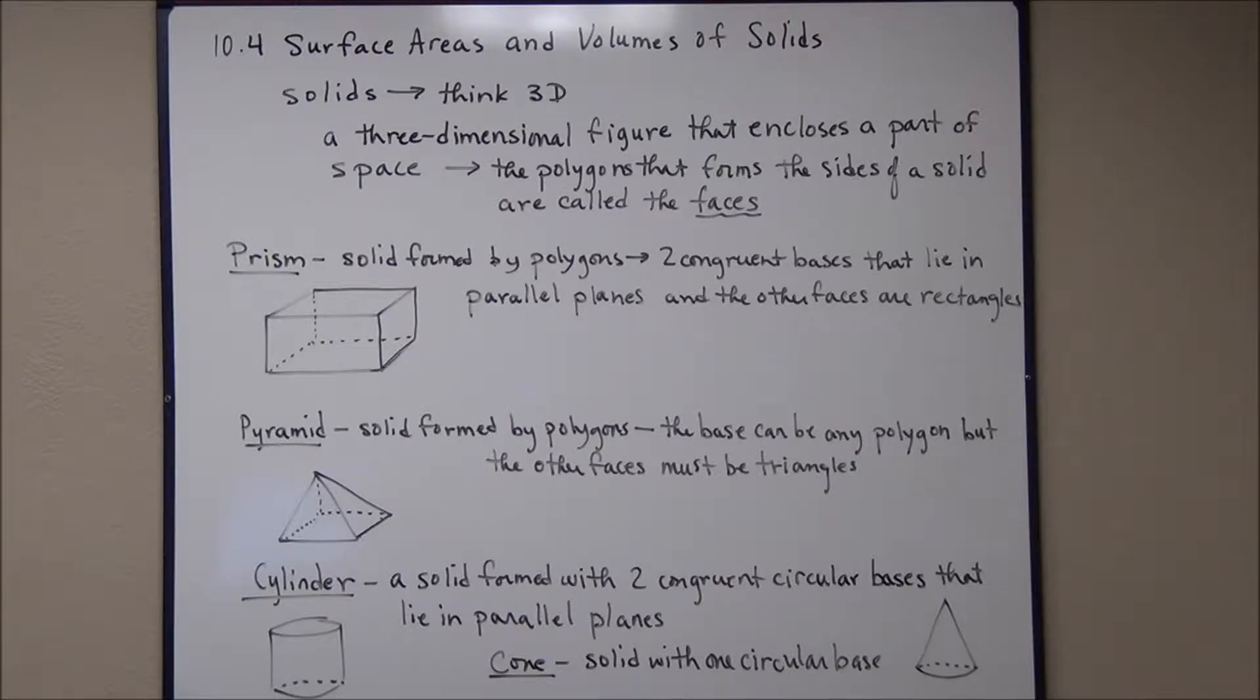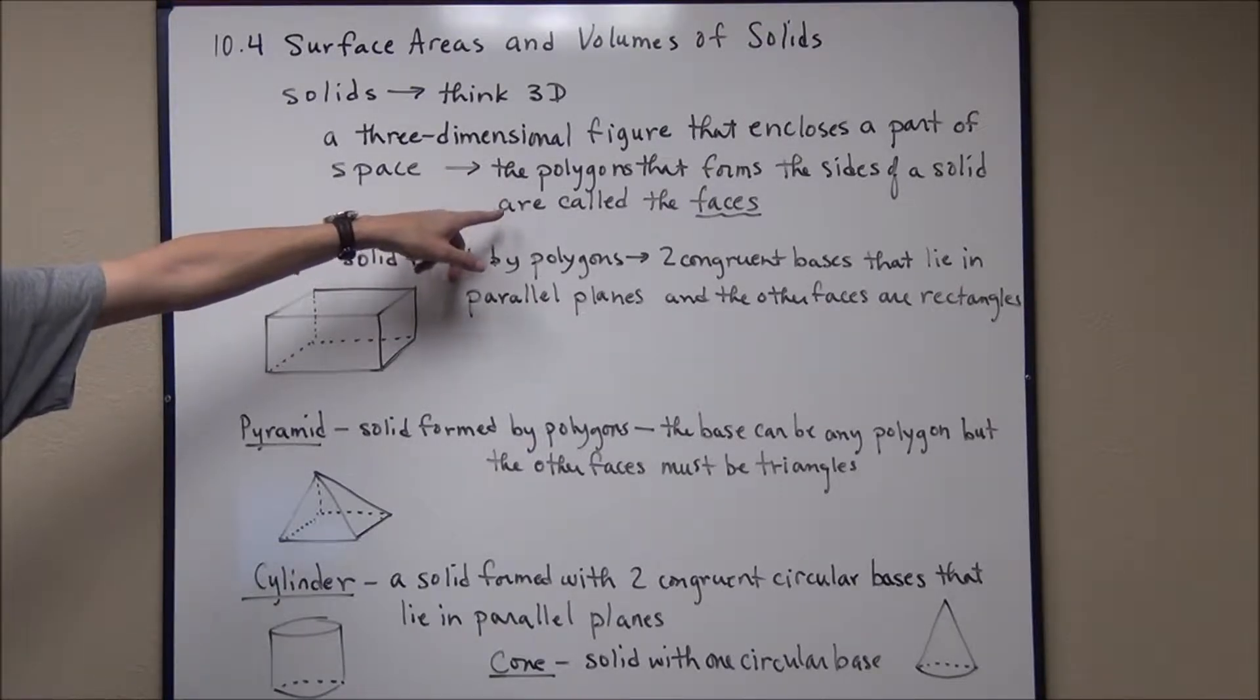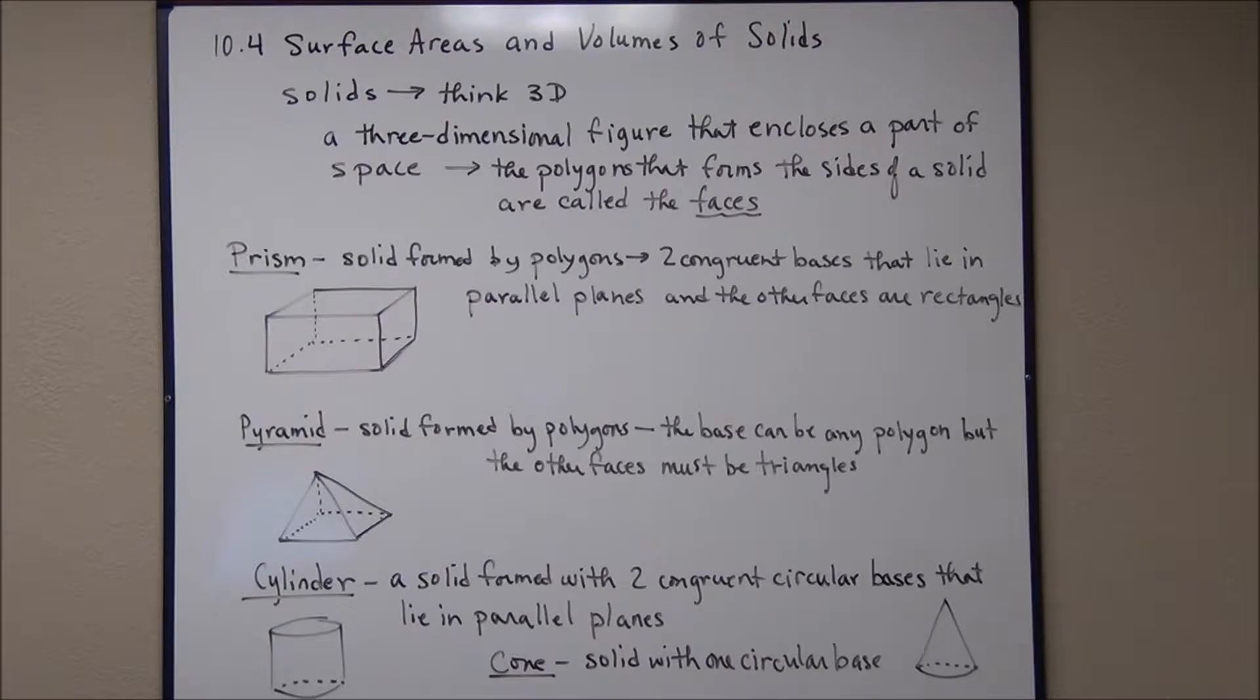We're going to look at surface areas and we're going to look at volumes, but first we're going to look at the different types of solids that we're going to be interested in. A solid is a three-dimensional figure that encloses part of space. The polygons that form the sides of the solid are called the faces. Kind of an unusual name.